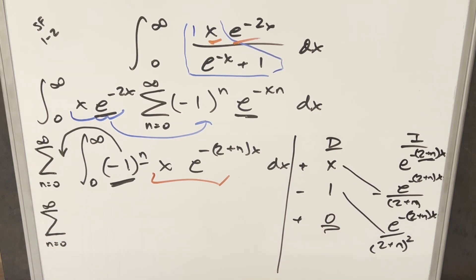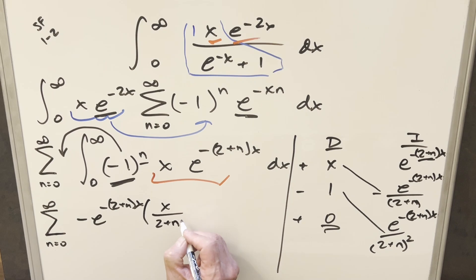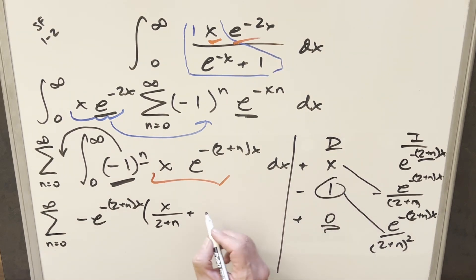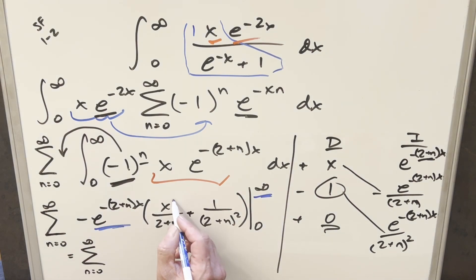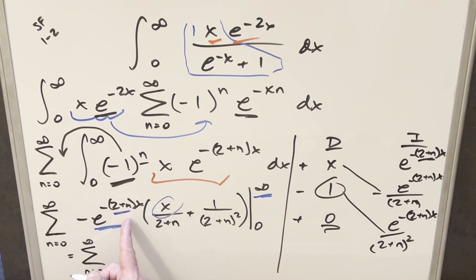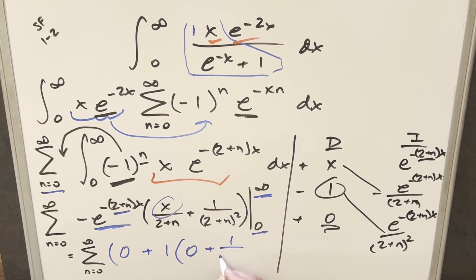This all comes inside our sum. Factoring out −e^(−(2+n)x) in front, the first term becomes x/(2+n) and the second becomes +1/(2+n)^2. We evaluate from 0 to infinity. At infinity, the exponential dominates everything else and goes to 0 (since 2+n > 0 for all n ≥ 0). Evaluating at 0 gives e^0 = 1, making that piece vanish, and we're left with just 1/(2+n)^2.